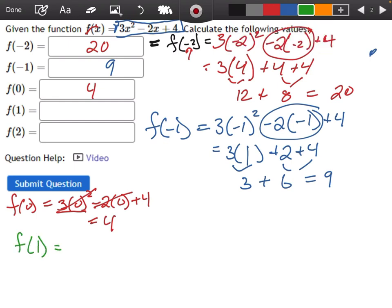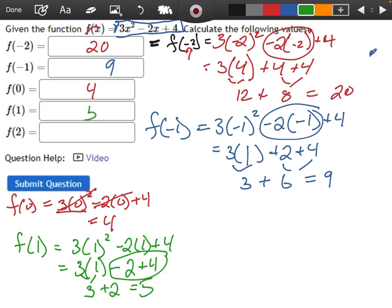Alrighty, let's do f of 1. So f of 1, 3, 1 squared, minus 2 times 1, again, plus 4. So 1 squared, 1 times 1, still 1. Negative 2 times 1, minus 2, plus 4. That's going to give us 3. A minus 2 and a plus 4 will be a plus 2. That should give me 5.